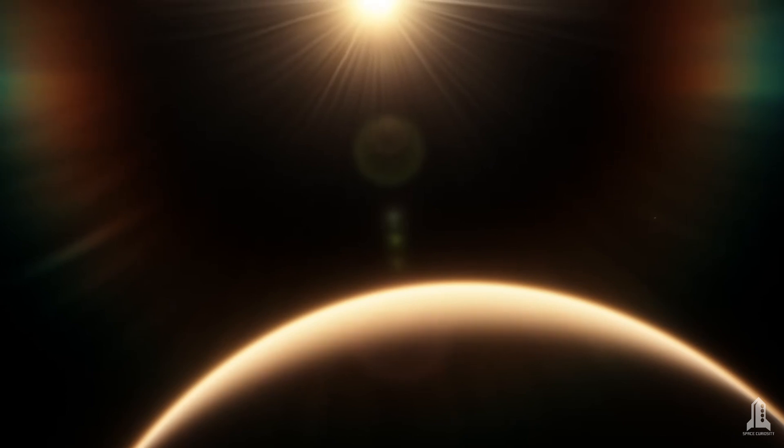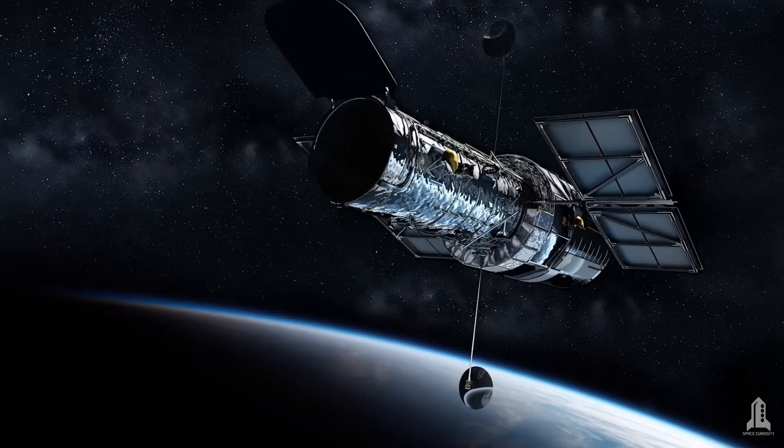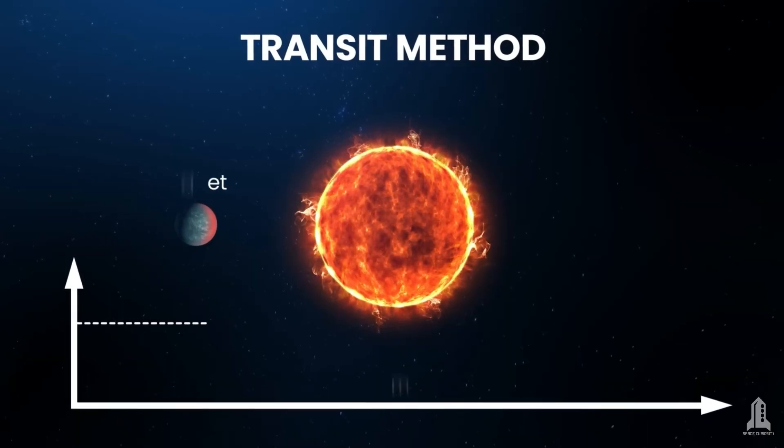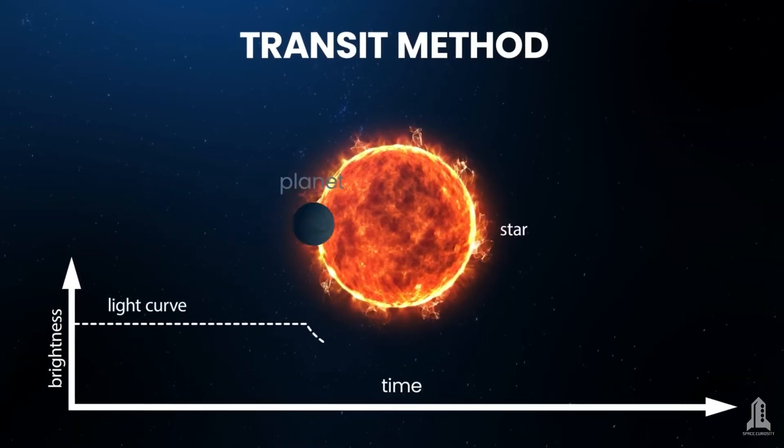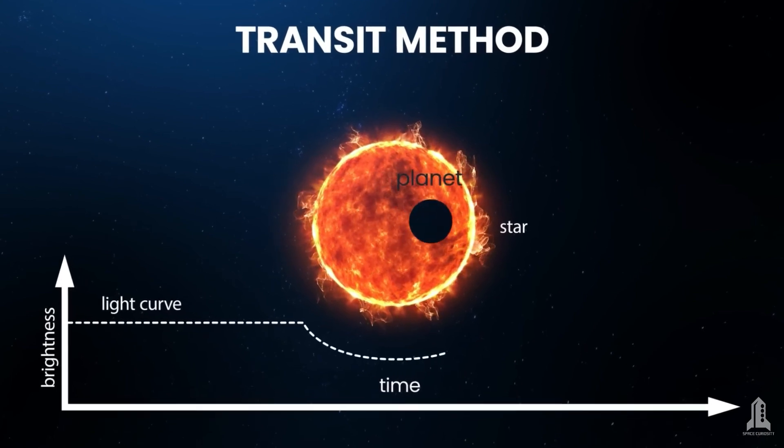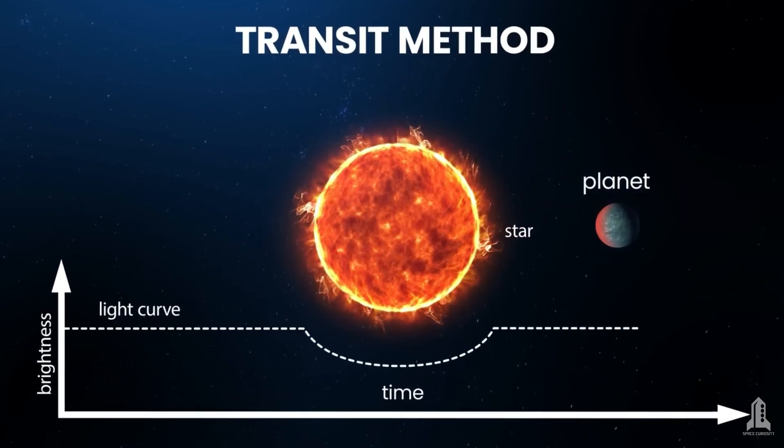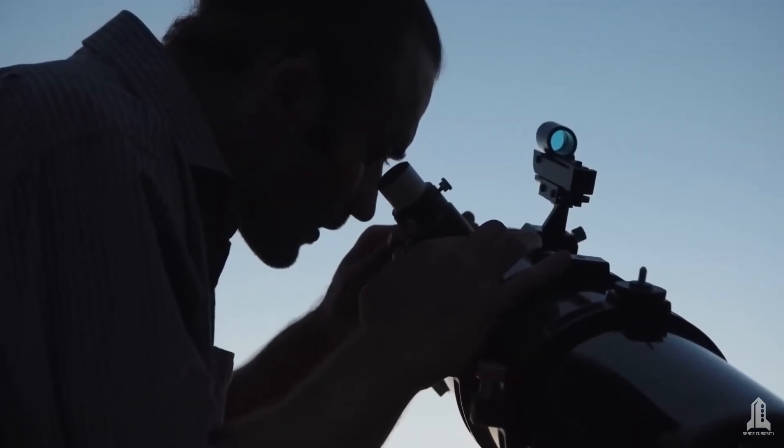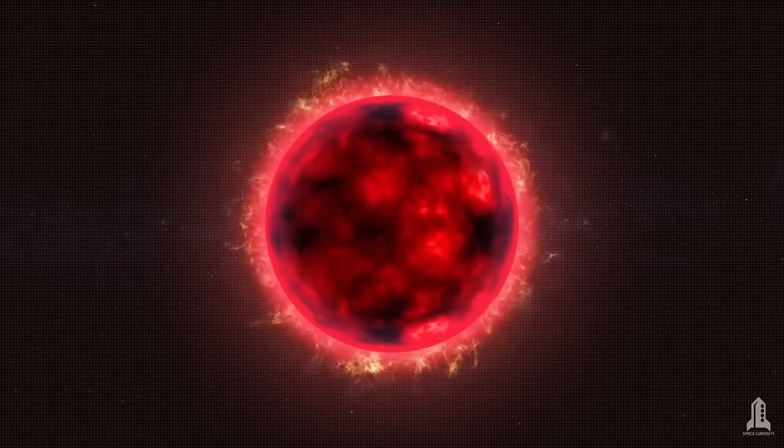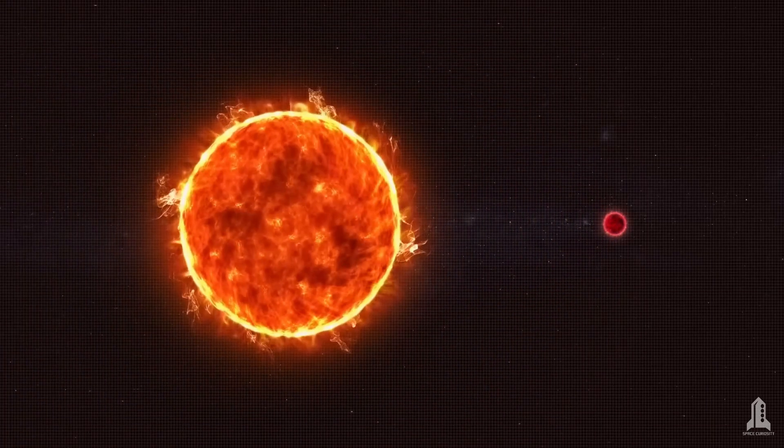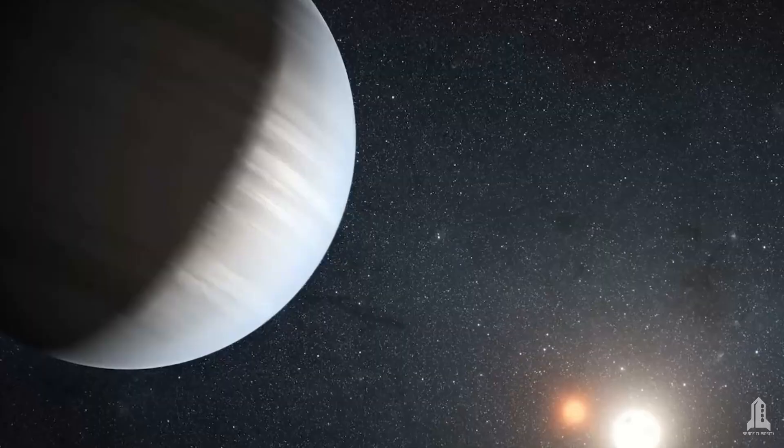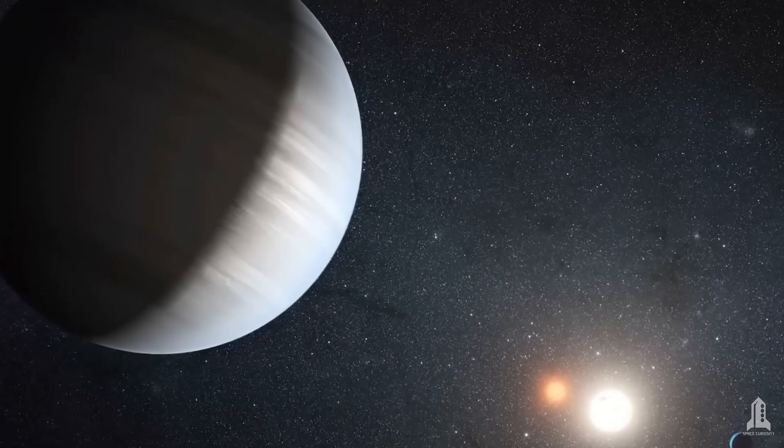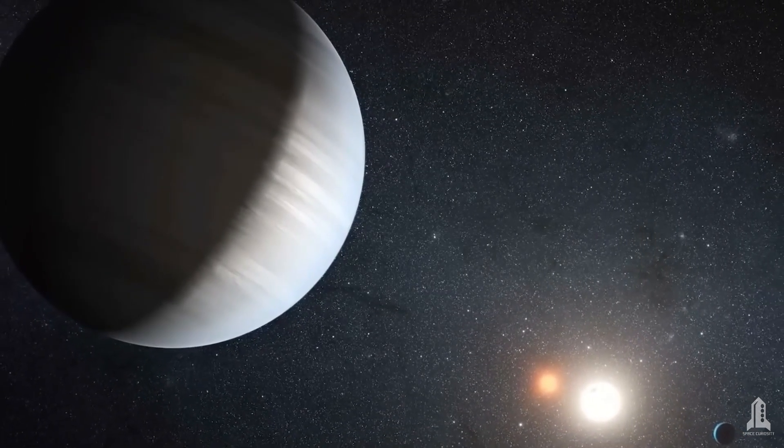The discovery of this planet was made possible by NASA's Kepler Space Telescope, designed to search for transiting planets, or planets that pass in front of their stars, temporarily dimming the light reaching Earth. The transit of Kepler-16b allowed scientists to measure its size and orbit with great precision. This discovery opened up new possibilities in the search for planets in binary systems, suggesting that there could be many more strange and wonderful worlds out there, orbiting two stars.